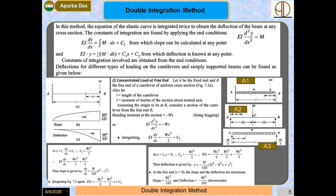The same approach can be applied for a cantilever beam with a uniformly distributed load, a simply supported beam with a midpoint load, or a simply supported beam with a uniformly distributed load. Using the governing equation, integrating once gives the slope and integrating again gives the deflection, after applying the appropriate boundary conditions.